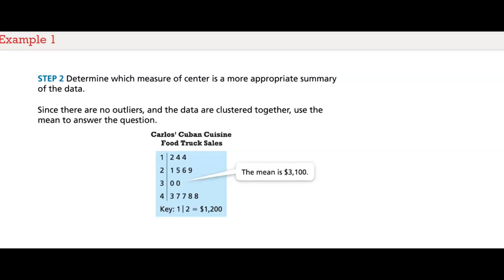The mean is $3,100. The median is $2,950. The average typical daily revenue for the food truck, or mean, is $3,100.